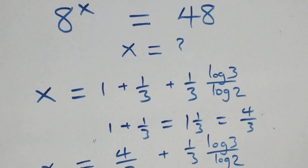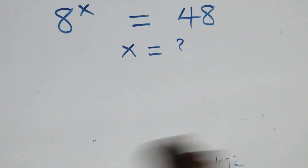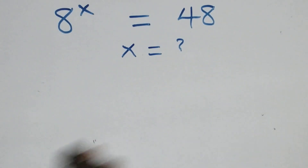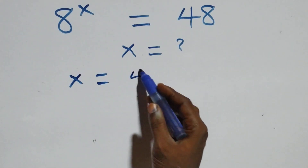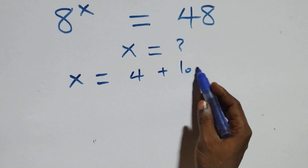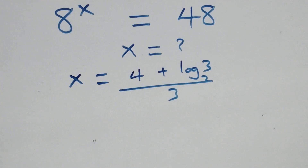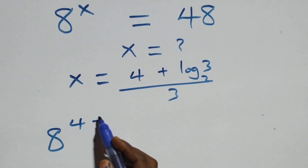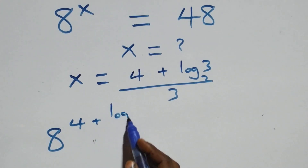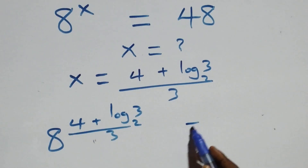We substitute the value of x = (4 + log₂3) / 3 back into the original equation. All we have becomes 8 raised to the power (4 + log₂3) / 3, and we check whether this equals 48.